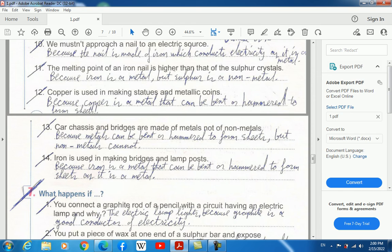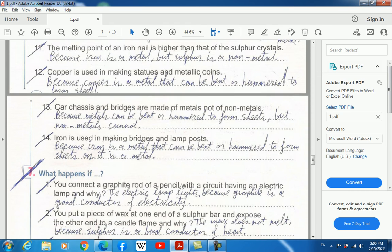Ten, we mustn't approach a nail to an electric source because the nail is made of iron which conducts electricity as it is a metal. Eleven, the melting point of an iron nail is higher than that of sulfur crystals because iron is a metal but sulfur is a non-metal.